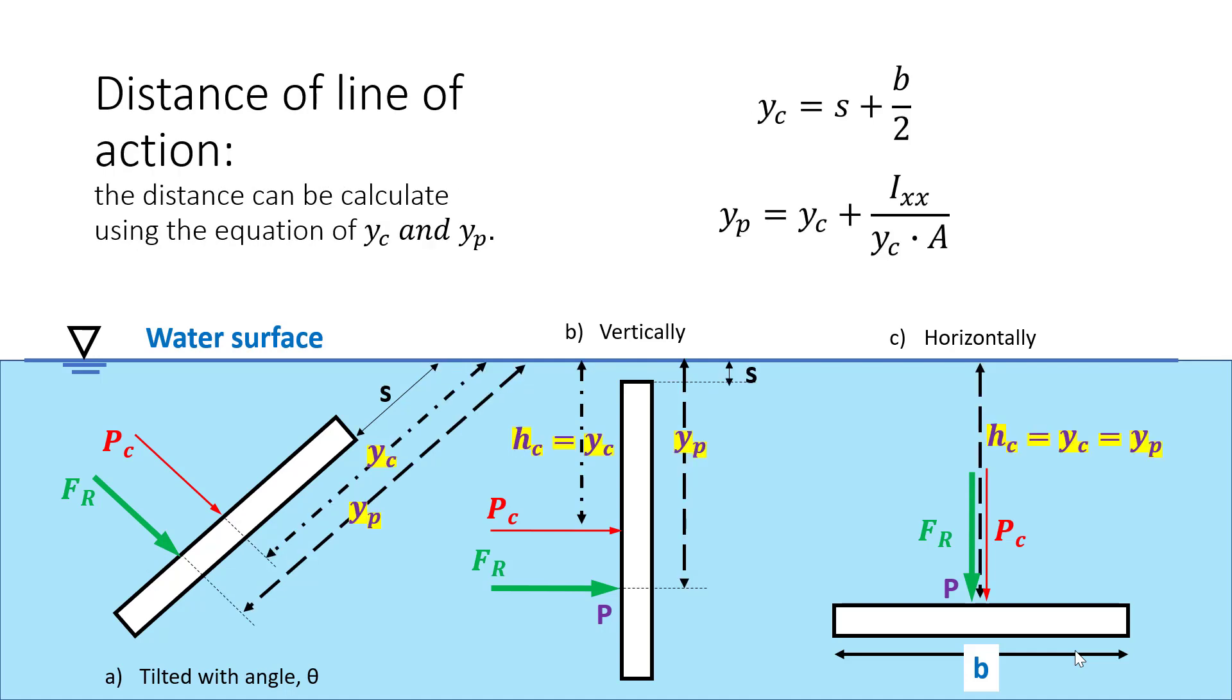Now let us look at the distance of line of action. The distance of line of action can be calculated using the equation of Yc and Yp. Yc is defined as the distance from the surface of water to the present line of action Pc. Yc equals to S plus B over 2, and Yp equals to Yc plus Isx over Yc times A, where Isx is the second moment and A is the area.